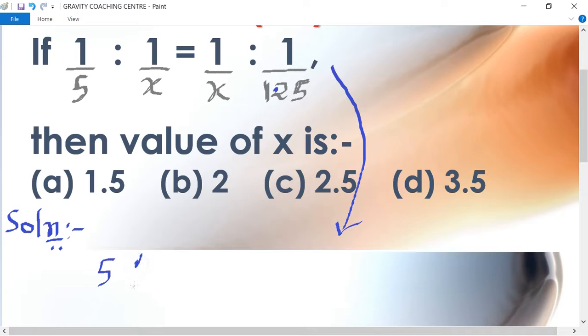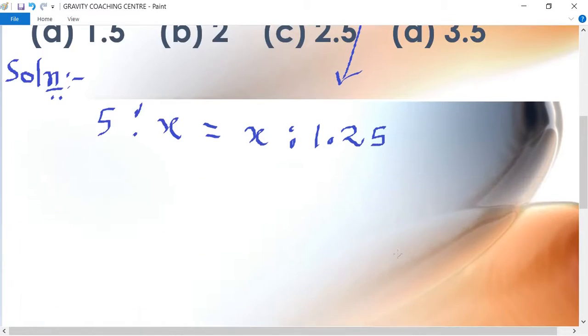Now, 5 ratio x equal to x ratio 1.25. Now, 5 upon x equal to x upon 1.25.